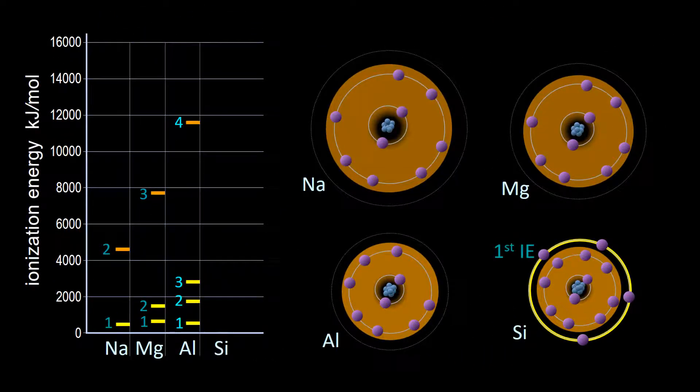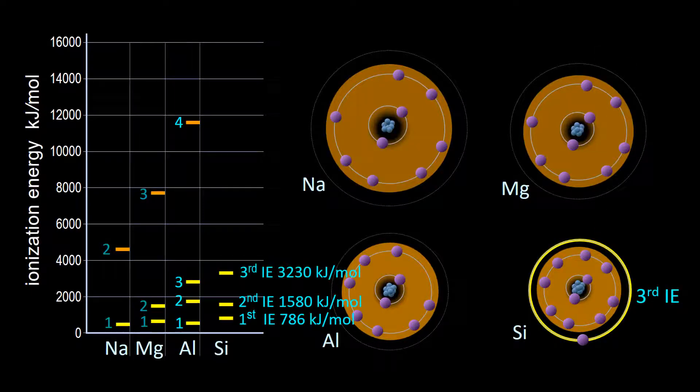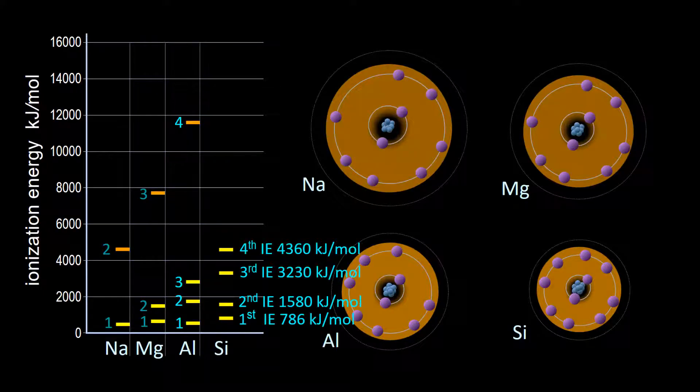For silicon, we see a similar pattern. Now removing the fourth valence electron gets us to a neon configuration. What's going to happen with the fifth ionization energy? You're right! A big jump for the fifth ionization energy which takes from a noble gas electron configuration.